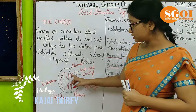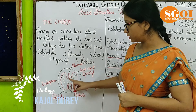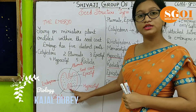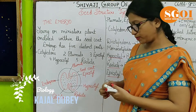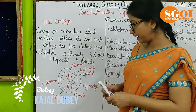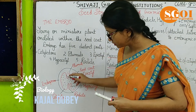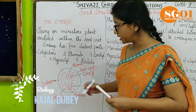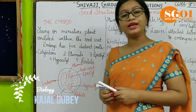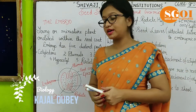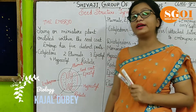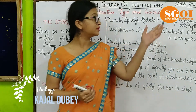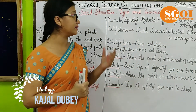As you can see in the diagram, this is the plumule, this is the epicotyl, this is the hypocotyl, and this is the radicle. These four parts combine together, and this portion of the seed is known as the embryonic axis.